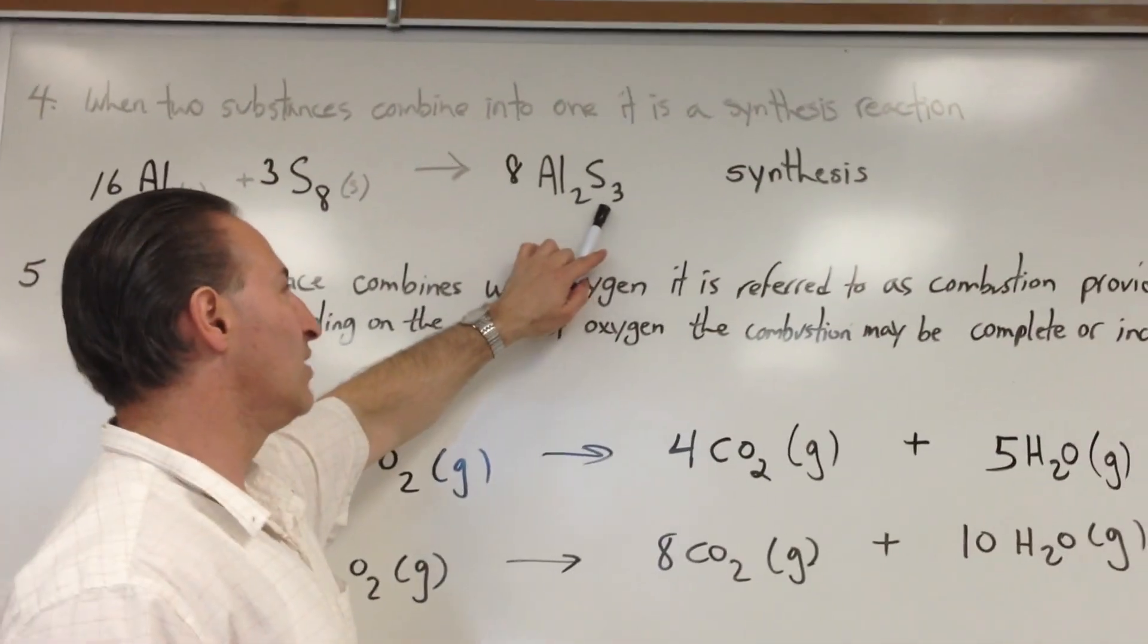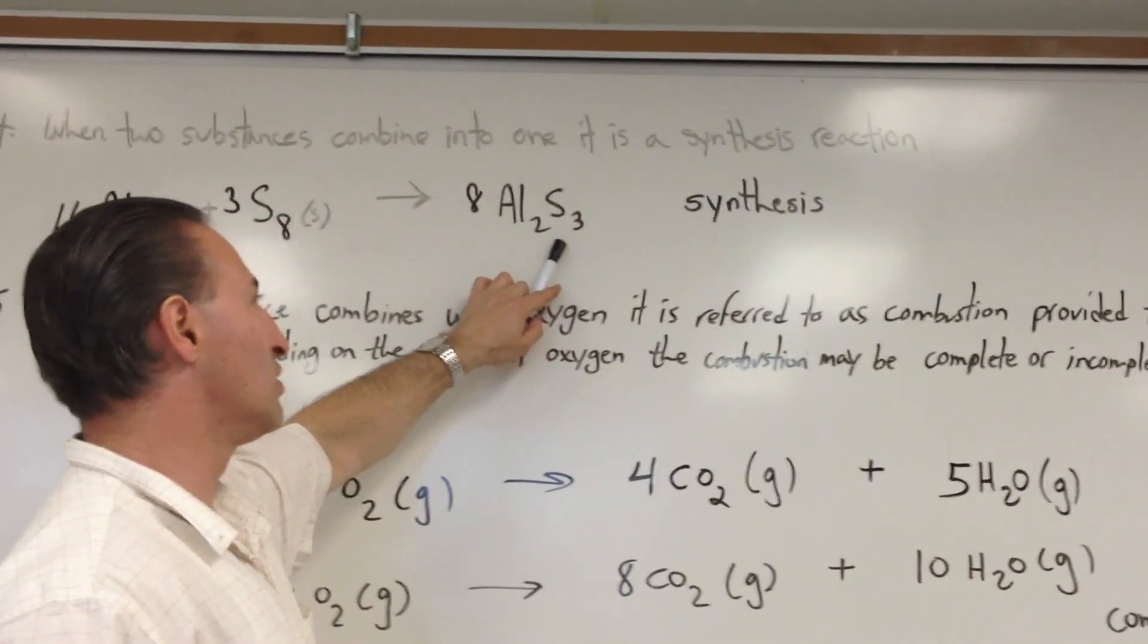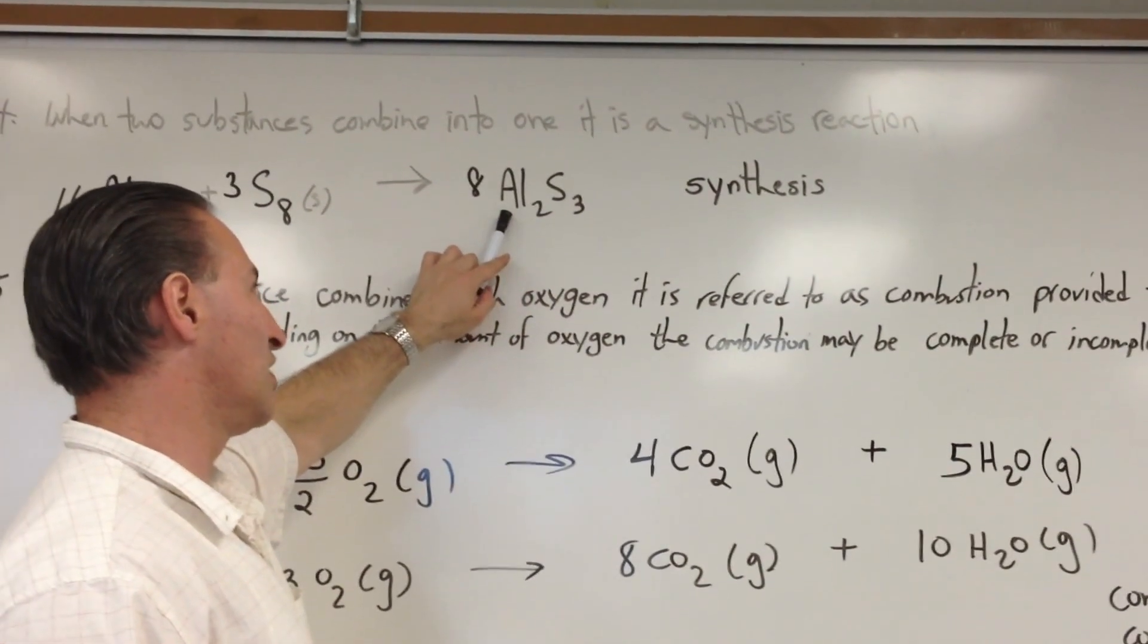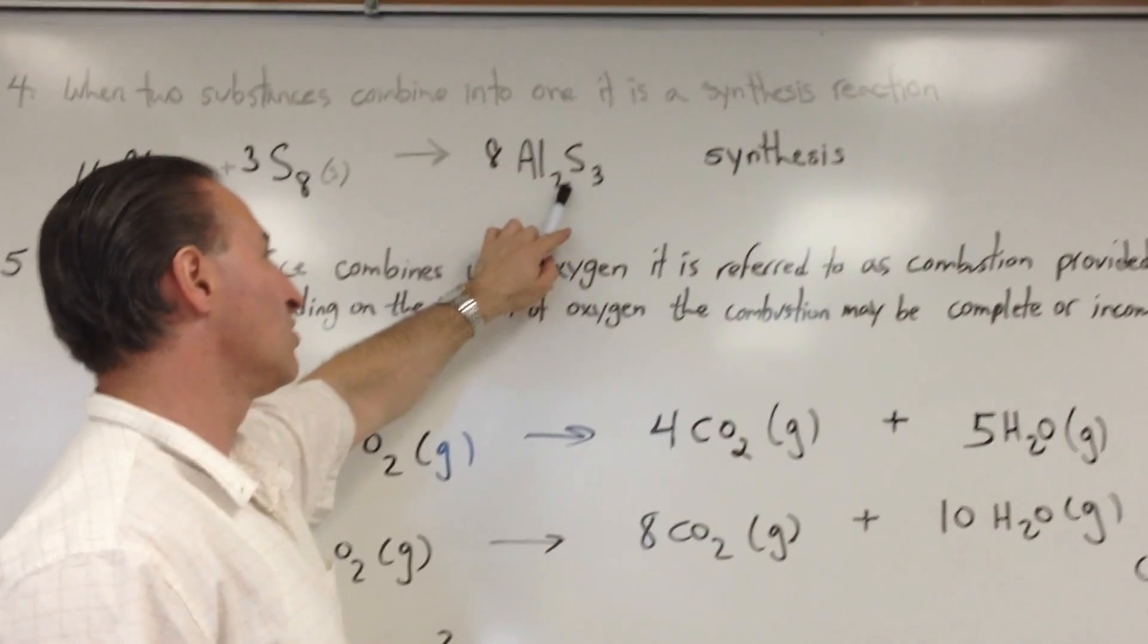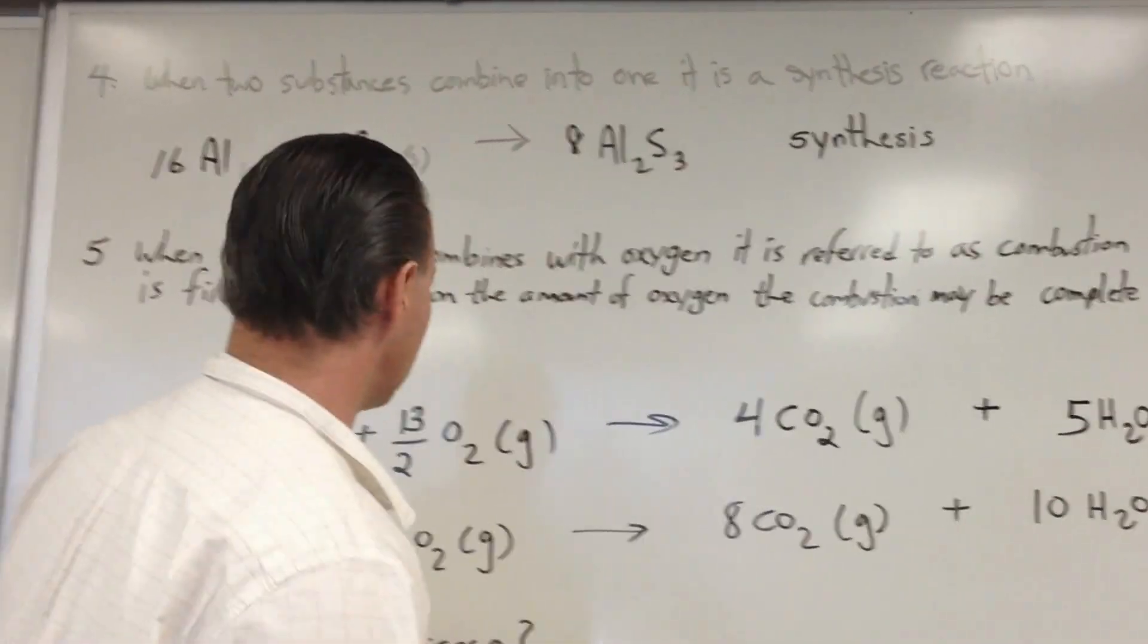And you'll notice that the sulfide, which takes on a negative two charge, combines with the aluminum, which takes on a plus three charge. So you have to write the appropriate subscripts when they combine.